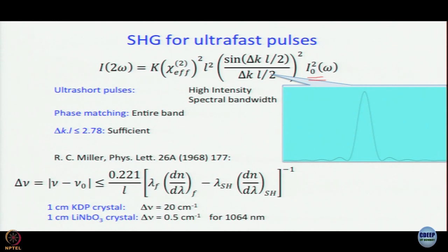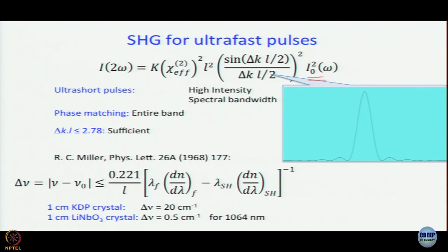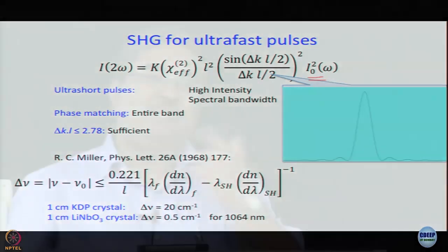Shorter the pulse, bigger the bandwidth. So if you are going to use a femtosecond pulse and use lithium niobate to generate second harmonic at 532 nm from a 1064 nm fundamental, what will happen? Your modal wavelength is 1064 nm for the fundamental, so you are going to generate 532 nm — fine — but the bandwidth of the second harmonic will be very small.